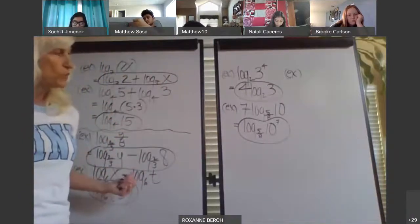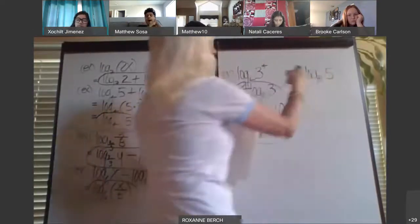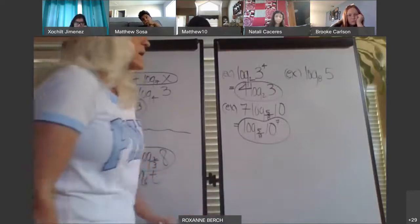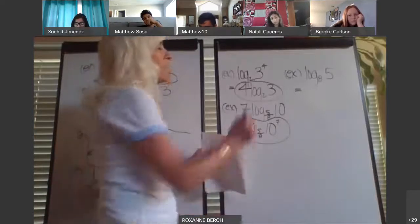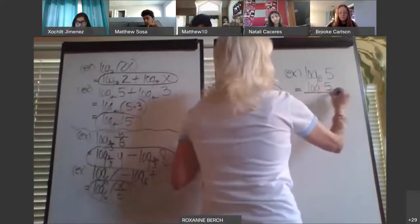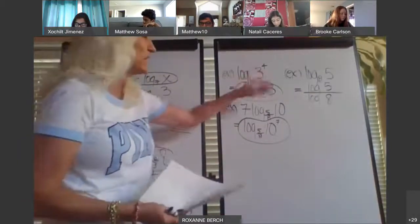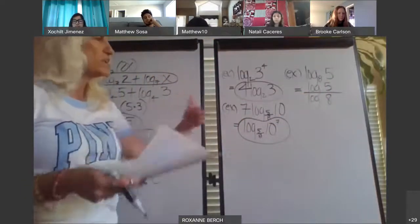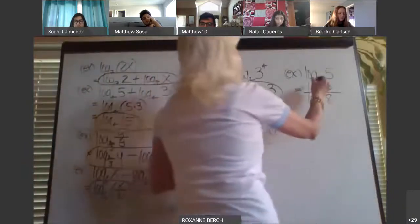We have the product property, the quotient property, the power property, and now I'm going to show you change of base. Regular calculators do not have a base 8 — they're all base 10. So what we would have to do is change these to base 10 so we can put them in the calculator. You would say, I can change this by saying log base 10 of 5 divided by log base 10 of 8, and now you would be able to put that in the calculator to get an approximation. The only thing to remember is this number goes on top, and the base of the logarithm goes on the bottom.